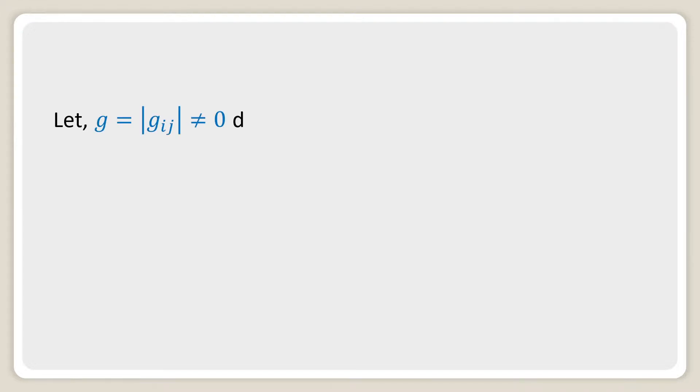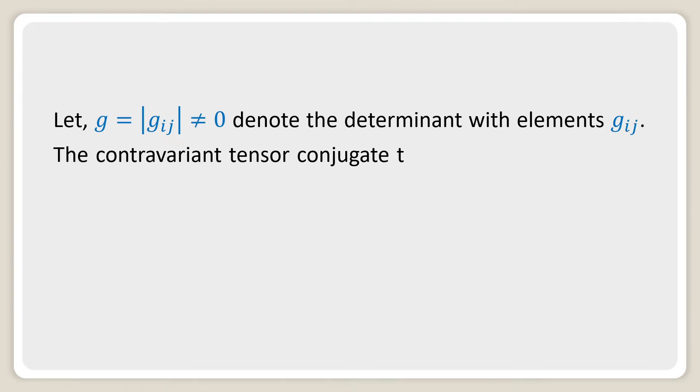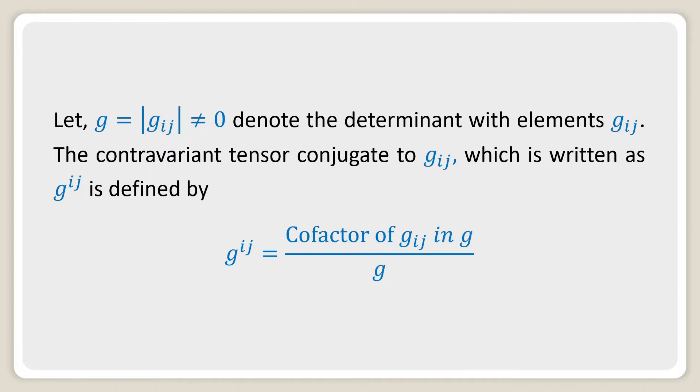Let g equal to the determinant of g_ij and this value is not equal to zero denote the determinant with elements g_ij. The contravariant tensor conjugate to g_ij, which is written as g^ij, is defined by g^ij equal to cofactor of g_ij in g divided by g.